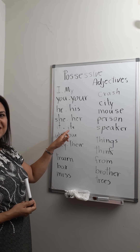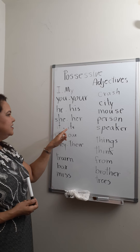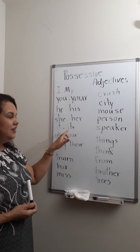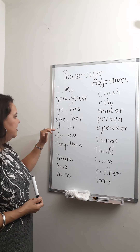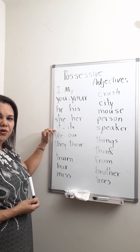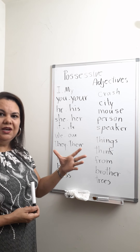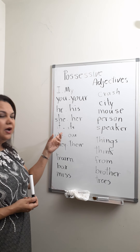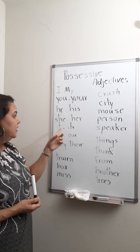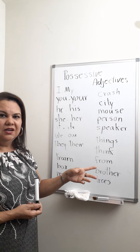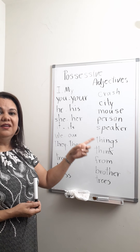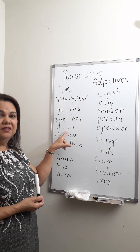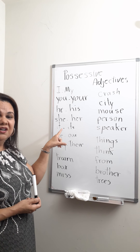It — its. The 'it' pronoun is used for animals and things, objects. So if I talk about the cat, its milk is done, its water is done, because the water belongs to the cat, which is an animal.